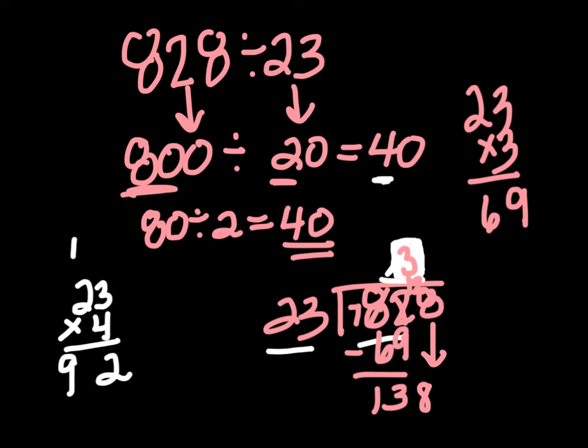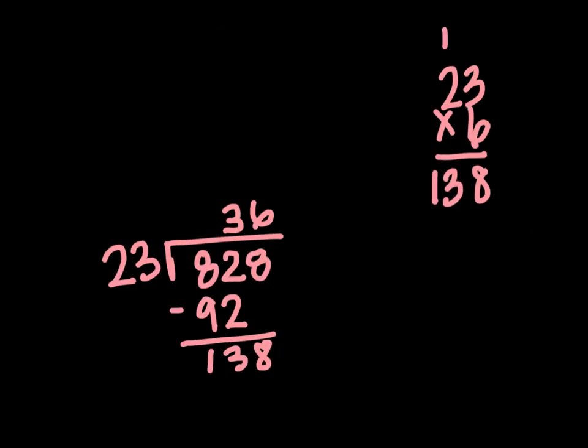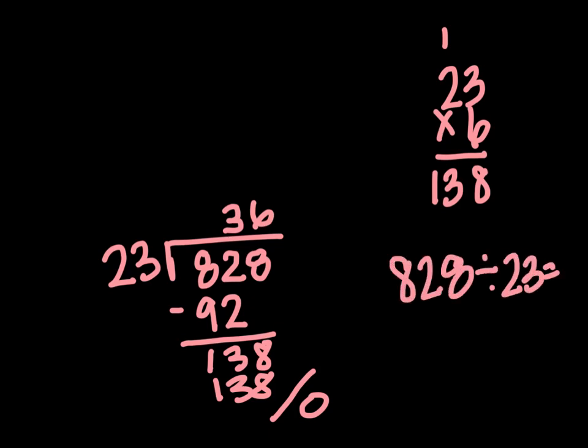So 138 is my next number that I need to divide by 23. If we go back to my estimate, I know that I said 40, and I know that 0 is not going to work because 23 goes into 138 at least a couple times. Since we took our 4 to a 3, I wonder if maybe we're going to be pretty close to 40. So I'm going to shoot for 6. I'm going to say 23 times 6, which gives me 138. So then I'm going to take 138 subtracting from 138 to get 0 with no remainder. So 828 divided by 23 is going to equal 36.